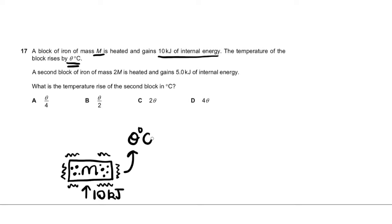And the question goes on to say, a second block of iron of mass 2M, so it's twice the mass, is heated and gains 5 kilojoules of internal energy. What is the temperature rise of the second block? So I'll just draw a bigger block right here because its mass is 2 times the mass of the first block. So 2M. And mind you, they're made of the same material, both iron. I'm just drawing them in different colors.